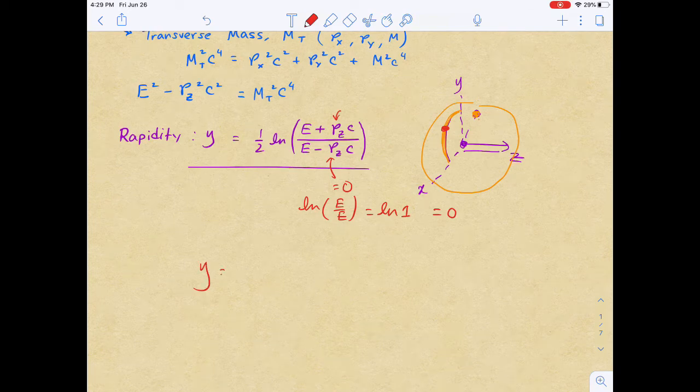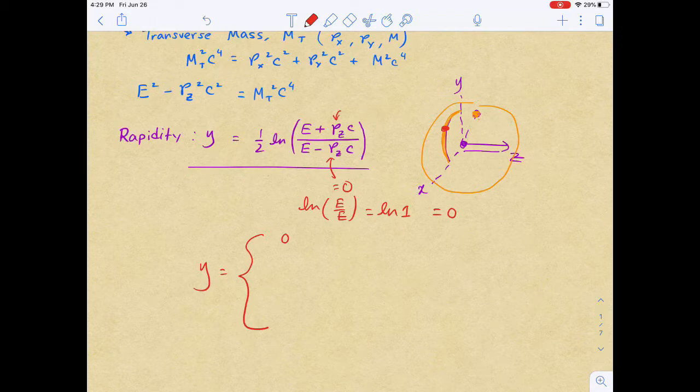We can have the rapidity equal to 0 when Pz is essentially 0. So if the particle is entirely in the xy plane, the rapidity is 0.